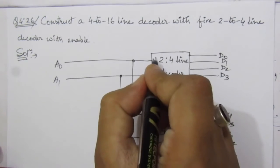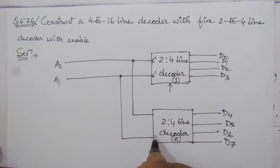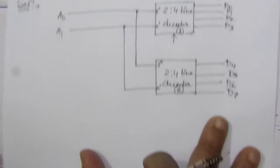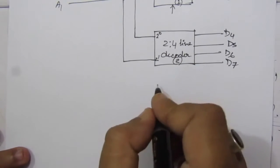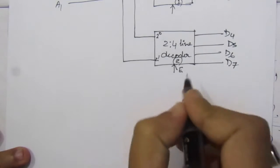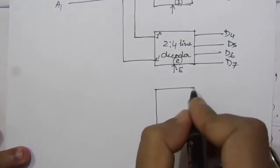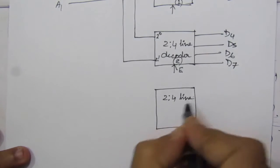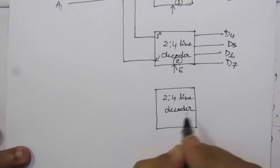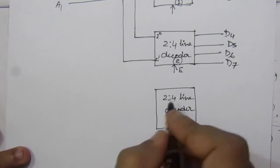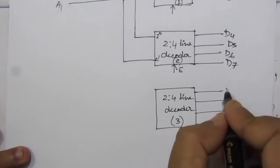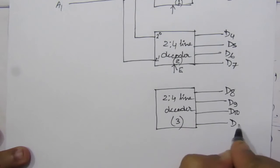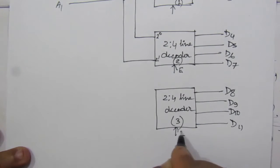So this input is 2 to the power 0, and 2 to the power 1. Now let us draw the third decoder. Here also we will have an enable input line. This is a 2-to-4 line decoder — the third decoder. Here also we will have 4 output lines: D8, D9, D10, D11, and an enable line.